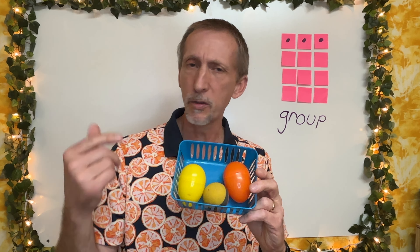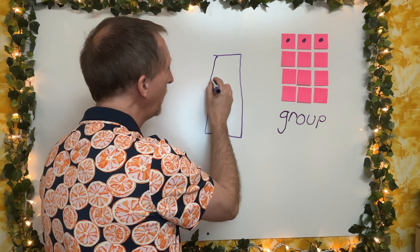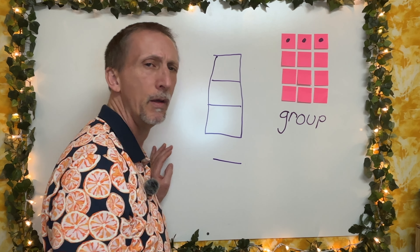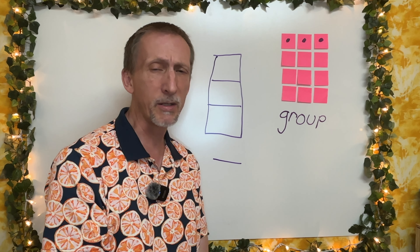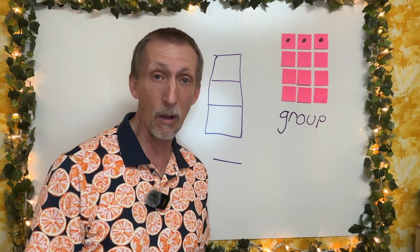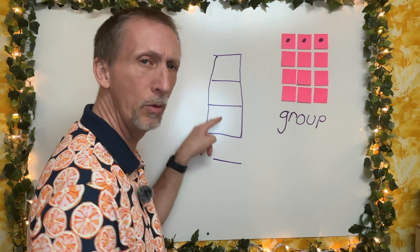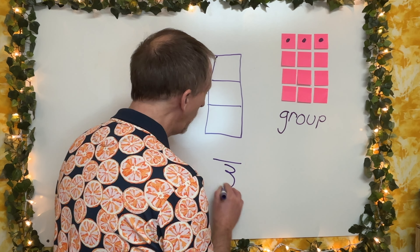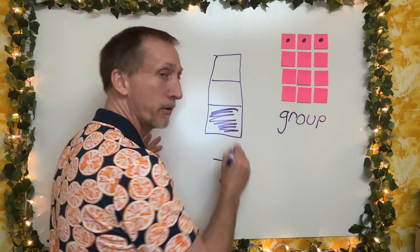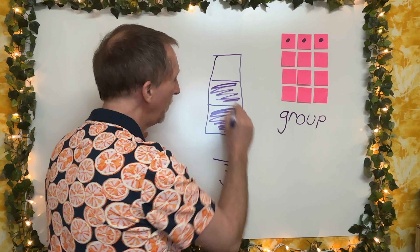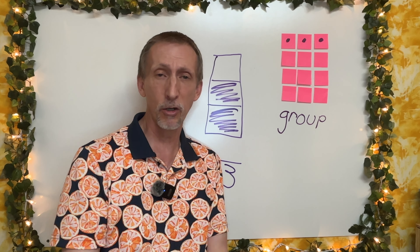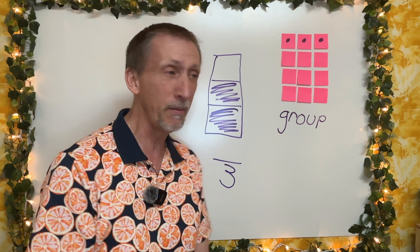Let's practice some fractions using shapes. Let's draw a rectangle and divide it up into parts, with our fraction bar underneath. How many pieces of our rectangle are there? Let's count them: one, two, three. There are three parts to my rectangle. Now if I shade this part and this part — how many parts are shaded? Let's count them: one, two. So two parts are shaded, and the number two goes on top. That is excellent so far.